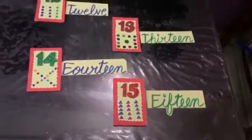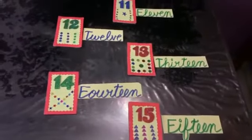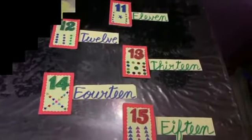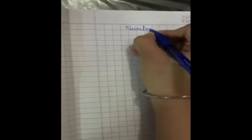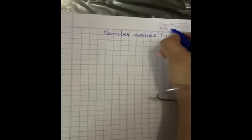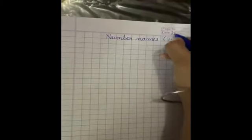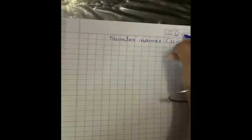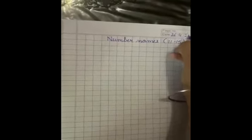Now, I will tell you how to write 11 to 15 number names in notebook. Write heading, date, classwork.